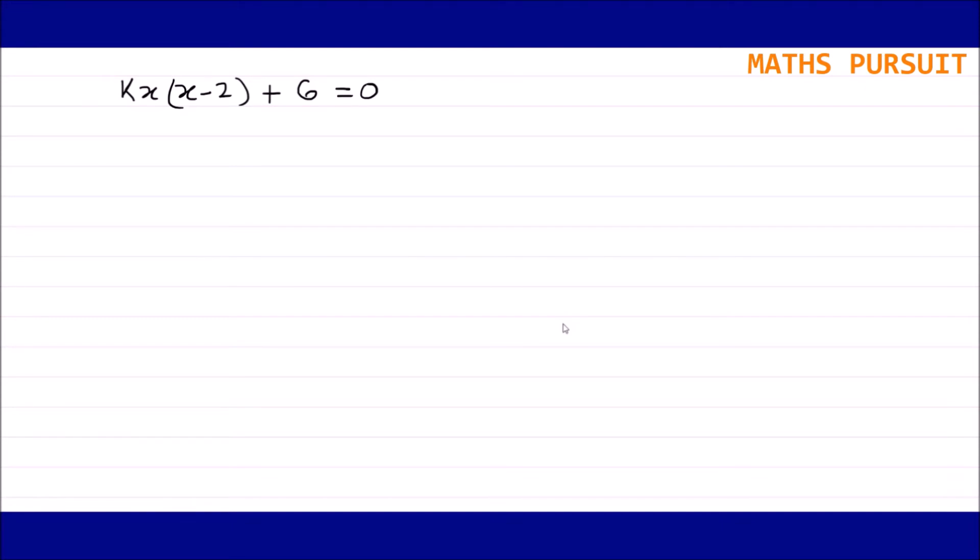Multiplying kx with (x - 2), we can write kx² - 2kx + 6 = 0. As per the question, this is a quadratic equation.